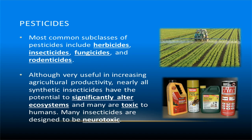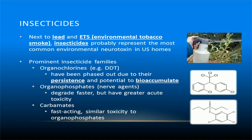A pesticide is any substance or mixture of substances intended for preventing, destroying, repelling, or mitigating any pests. The most common subclasses of pesticides include herbicides, insecticides, fungicides, and rodenticides. Although very useful in increasing agricultural productivity, nearly all synthetic insecticides have the potential to significantly alter ecosystems, and many are toxic to humans. Many insecticides are actually designed to be neurotoxic. About 1 billion pounds of pesticides are used annually in the United States, and over 16,000 kinds of pesticide products are being marketed. The EPA estimates that among 2 million agricultural workers in the United States, 10,000 to 20,000 have been diagnosed with pesticide poisoning. 10 out of the 12 most dangerous and persistent organic chemicals are actually pesticides. Next to lead and tobacco smoke, insecticides probably represent the most common environmental neurotoxin in U.S. homes.